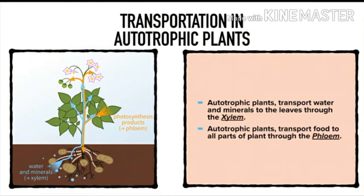Autotrophic plants transport water and minerals to the leaves through the xylem. The roots absorb water, and from the roots, water is transported to all parts of the plant through the vessel xylem. Autotrophic plants transport food to all parts of the plant through the phloem. The food is prepared in the leaves, and from the leaves, food is transported to all parts of the plant through phloem.